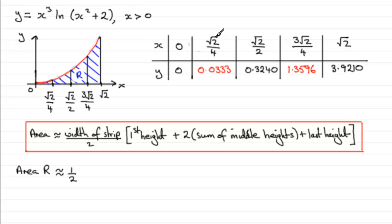The width of a strip can clearly be seen from the table here. It's just going from 0 to root 2 upon 4. It's always the same width. That width is root 2 upon 4. So we can put that in as root 2 over 4. Let's put that in brackets there. So we've done half the width of a strip.